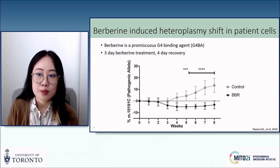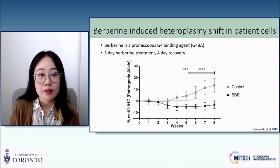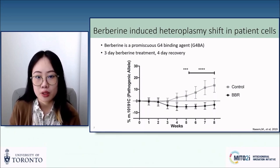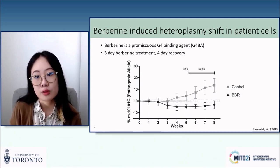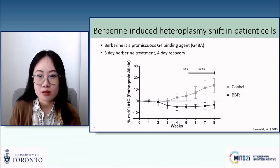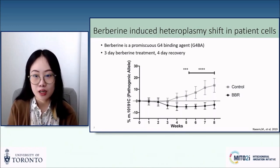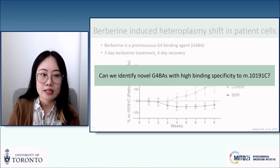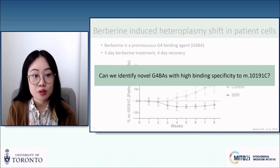Previous work in the lab has found that the non-specific G4 binding agent berberine is capable of inducing heteroplasmy shifting in patient cells. On the x-axis is time in weeks, and on the y-axis is the change in percent pathogenic allele compared to week zero. Over an eight-week treatment period, we can see an upward drift in percent pathogenic allele in the control cells, which is what we typically observe with these patient lines. With the berberine-treated cells, the same upward drift is not observed, and the percent pathogenic heteroplasmy actually decreases compared to week zero. This made us wonder if we could identify novel G4 binding agents with high specificity to the 10191 G4, which could then potentially be developed into therapeutic treatments for Leigh syndrome.